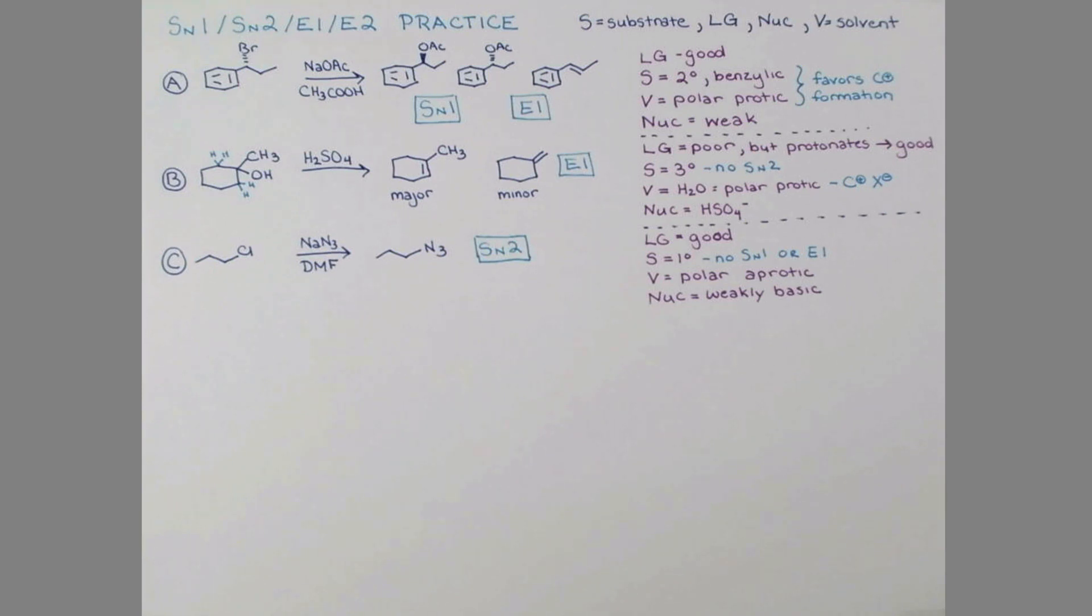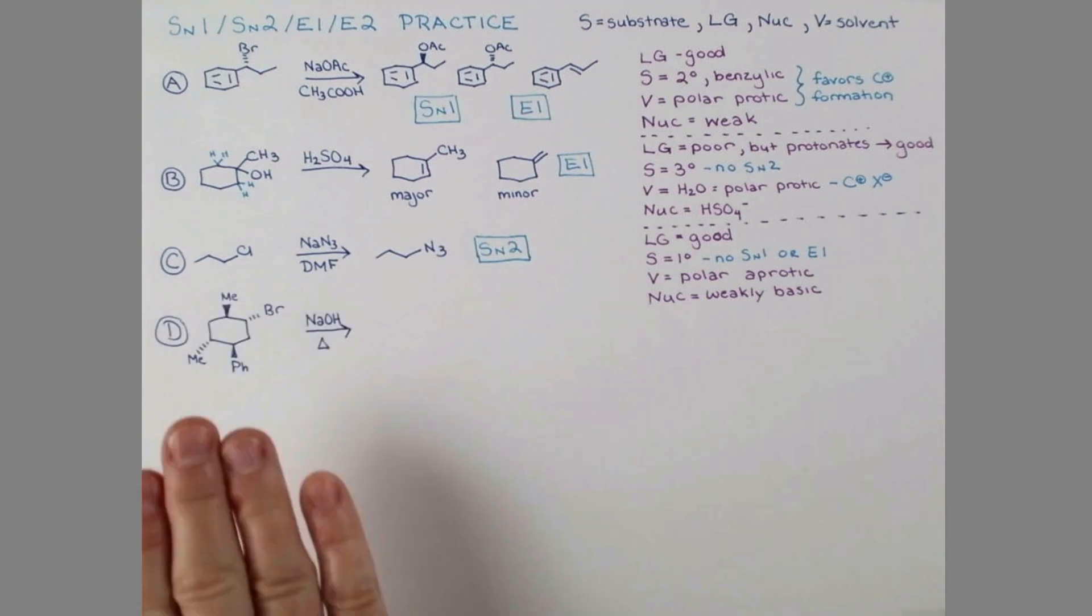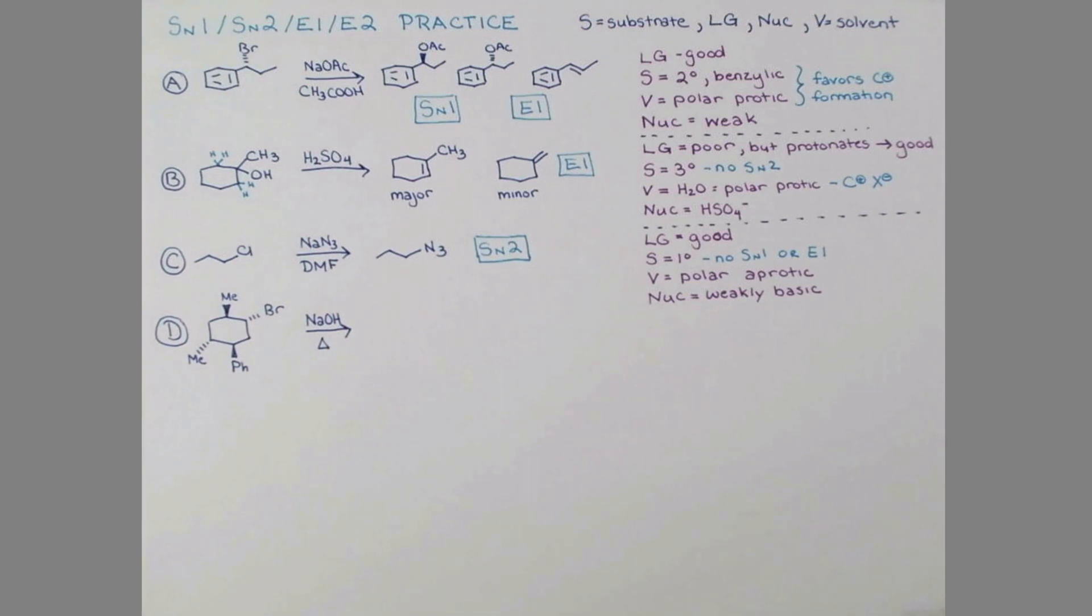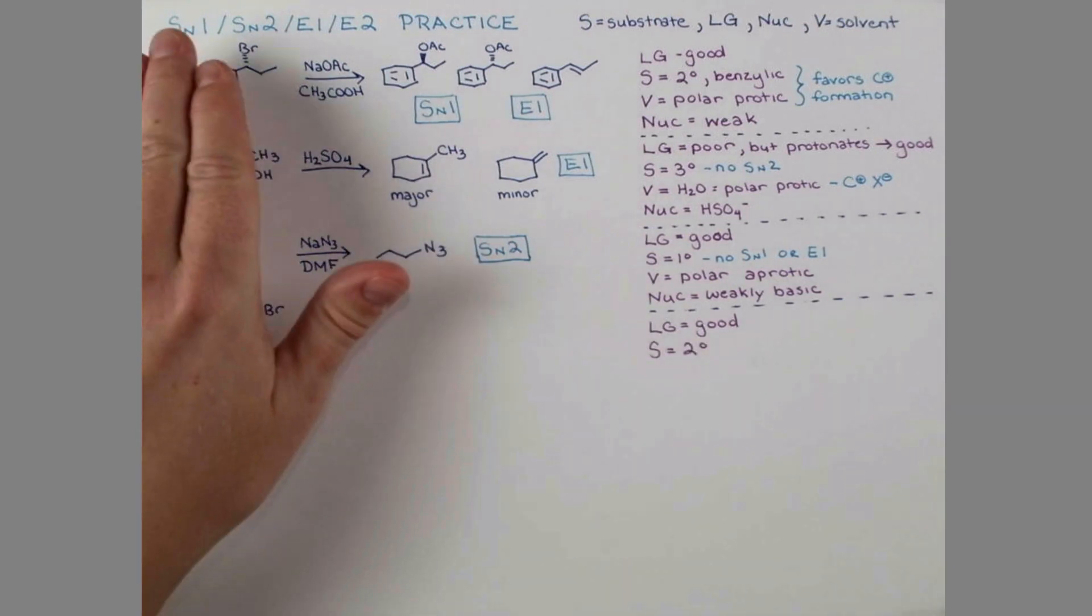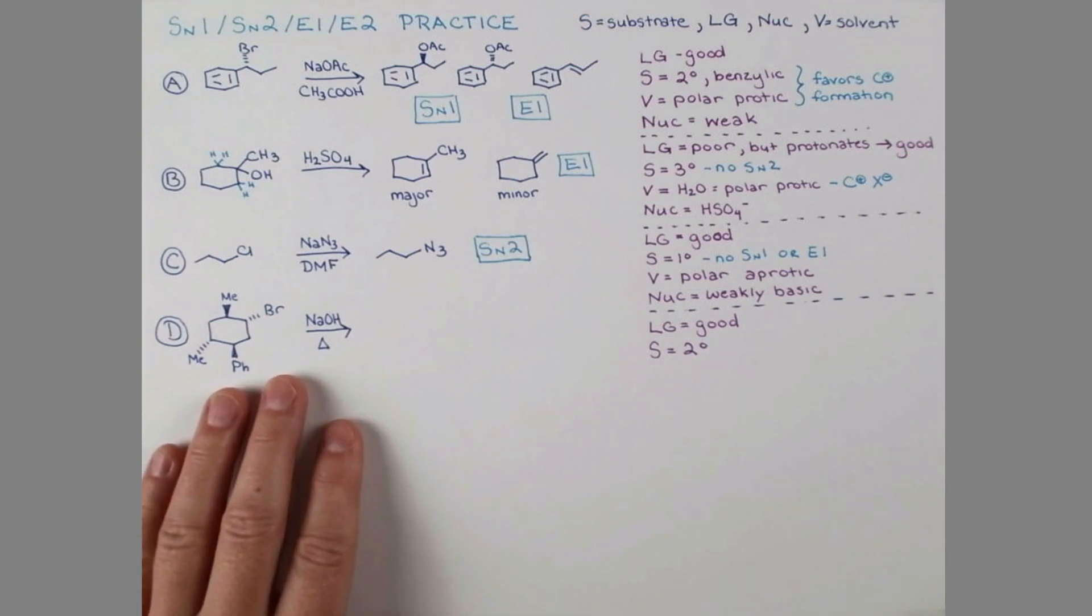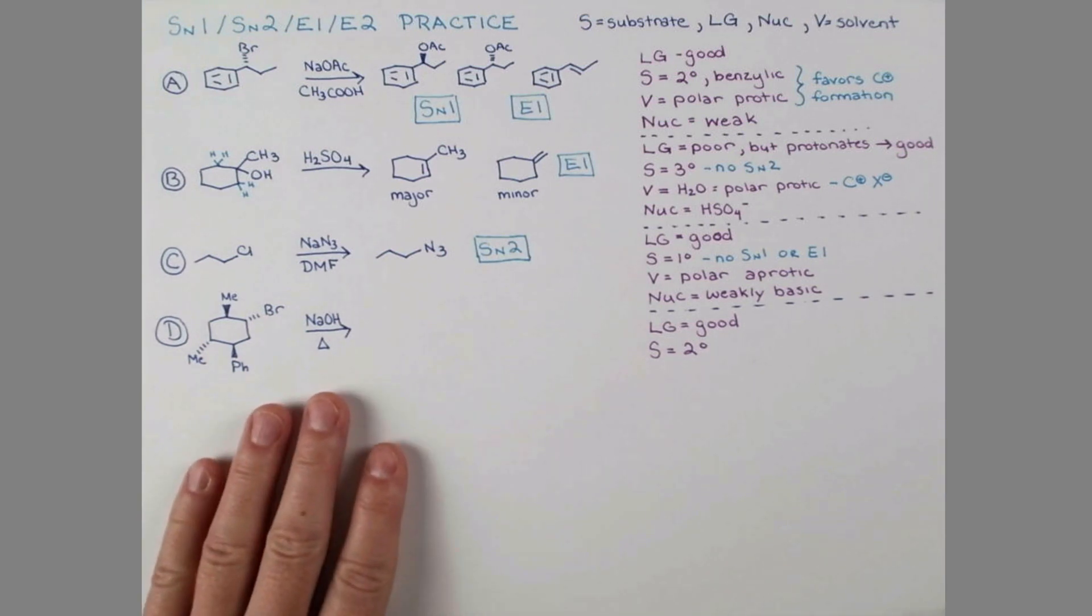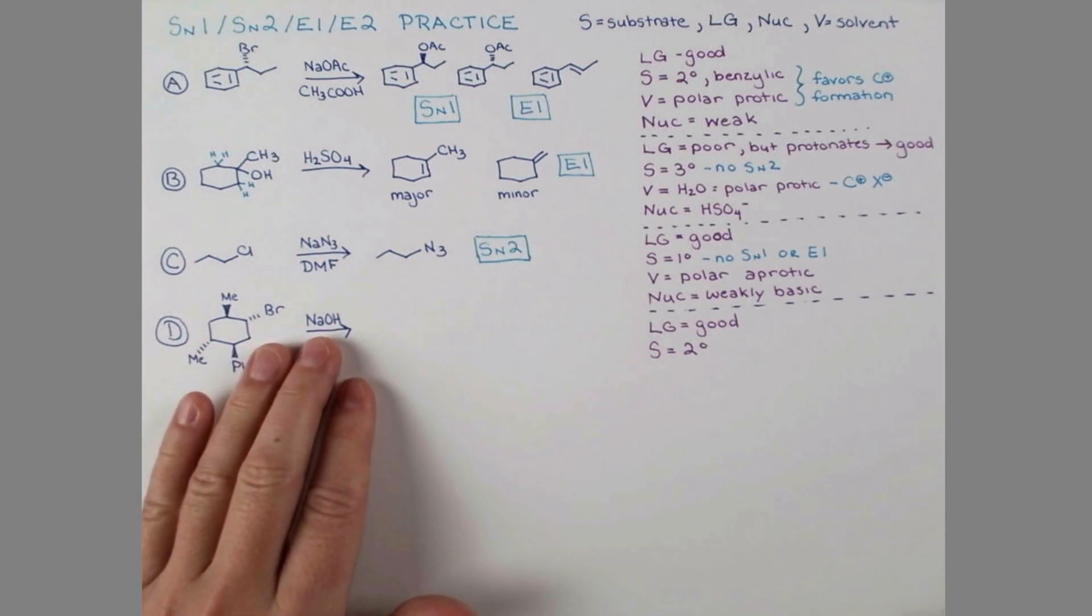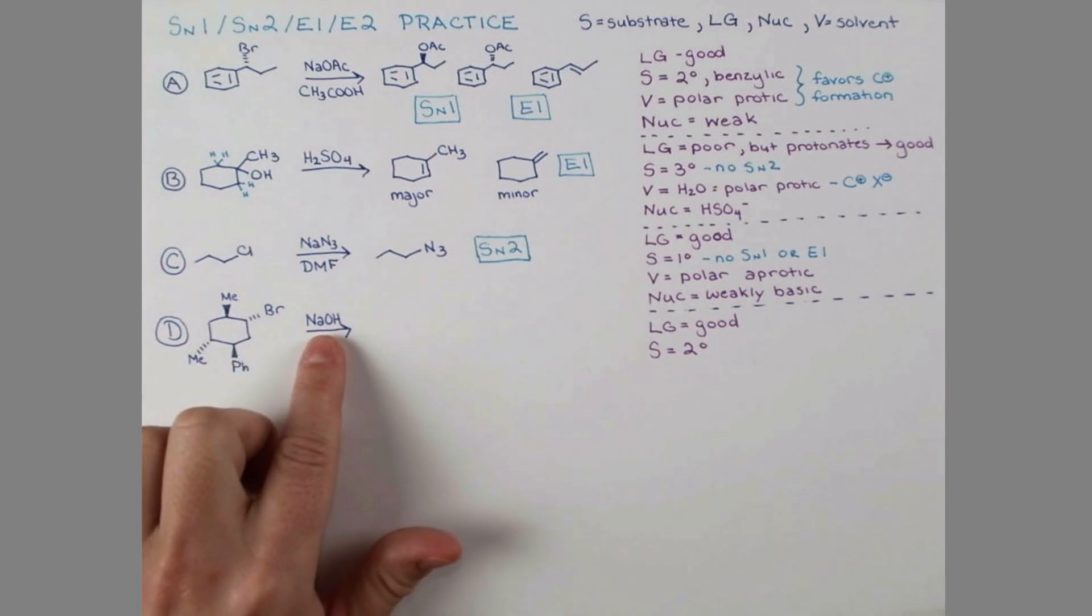This piece of information gives us a great clue. Primary carbocations are not stable, so this substrate cannot form a carbocation. This means no SN1 or E1 mechanisms are possible. The solvent is polar aprotic, often used in SN2 and E2 reactions. So now that's the last choice that we have to make. Let's look to our nucleophile. N3- is a weakly basic nucleophile. All signs point to SN2 here.